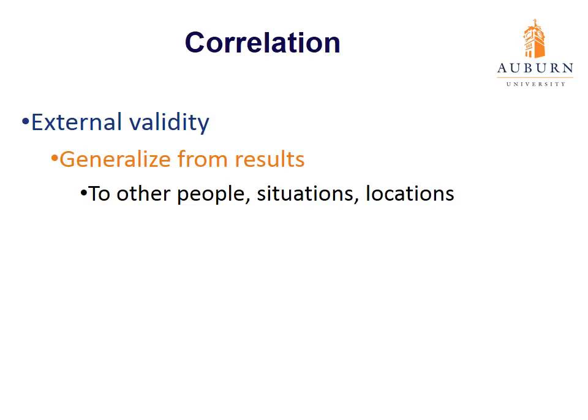External validity is sometimes called generalizability. In other words, will we be able to generalize our results from our study to other people, situations, and locations? So far we've talked about inferring to larger populations, but sometimes you may want to infer to different populations, different time periods, or even different locations. If we do a study in the south, we may want to generalize to the population in the west, and how well we can do that is a measure of external validity.